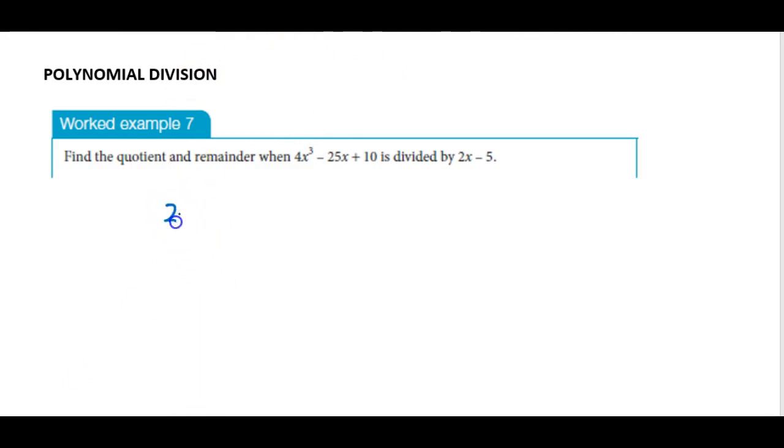So setting up the algorithm we want to see how many times that linear polynomial goes into this cubic polynomial. We have no x² term so we put 0x² and the rest of the terms are in order of descending power of the variable.